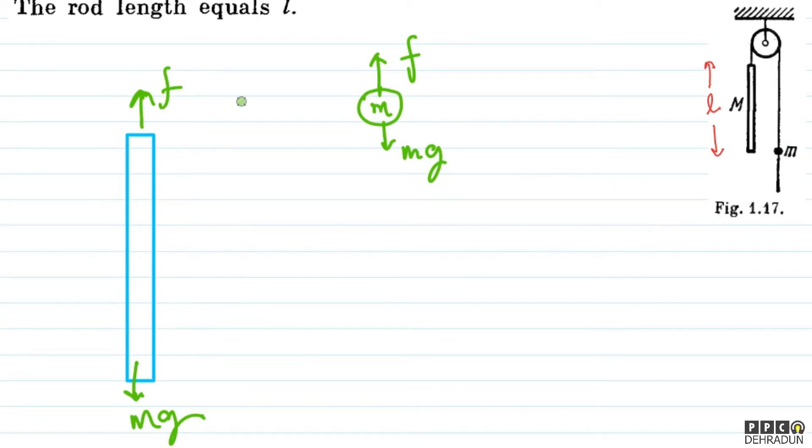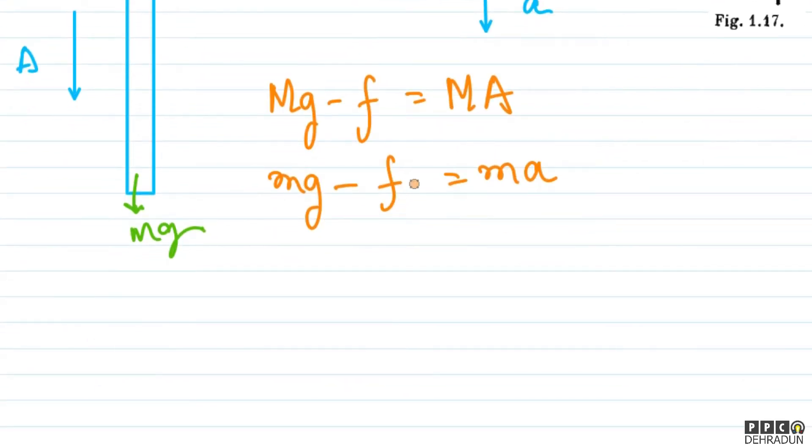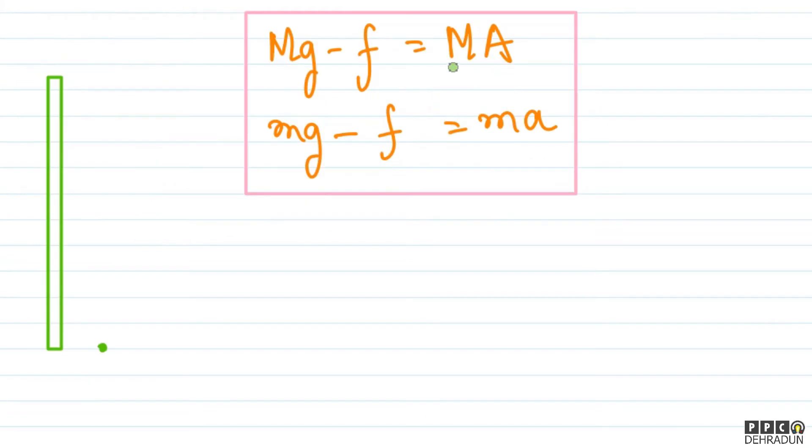Now see, both are going downward. I represented tension as f. Now both are going downward. So suppose the acceleration of small m is downward, small a, and the acceleration of capital M is downward, capital A. So what equation can we write? First, if I write the equation for this rod: Mg minus friction equals capital M times capital A. Similarly, for this bead or ball: small mg minus friction equals small m times a. So see, we have two equations now.